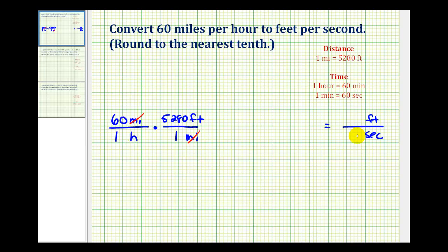Now we need to convert hours into seconds. So we'll multiply by another unit fraction. We don't want hours when we finish. We'll have to put hours in the numerator this time so that it simplifies with the hours here in the denominator. And we'll convert hours into minutes first. So we'll have minutes in the denominator and one hour is equal to 60 minutes.